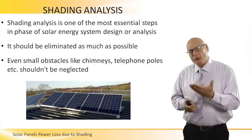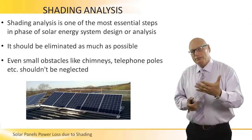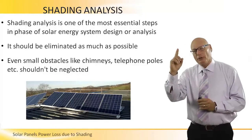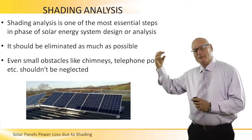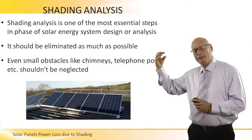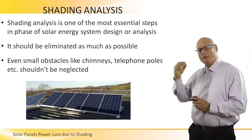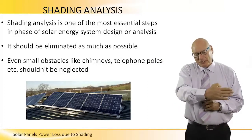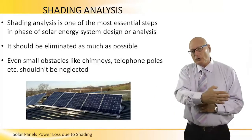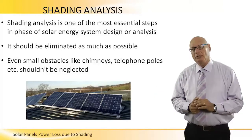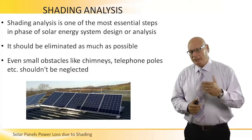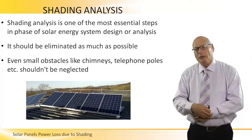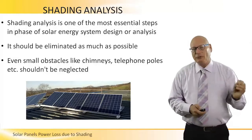If in front of a PV array we have a telephone pole and the sun is behind the telephone pole, as the sun moves there will be a line of shade. This line of shade will move across the PV array, causing a reduction in the output power. So shading should be avoided.